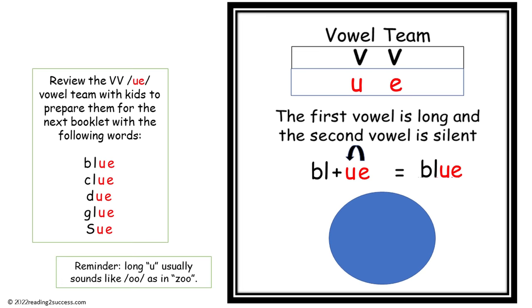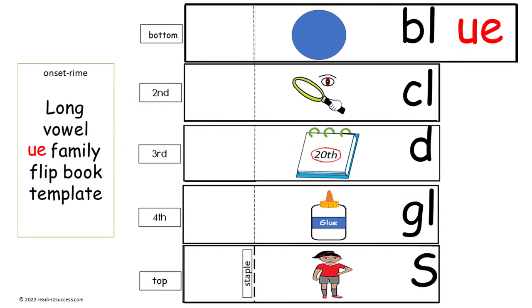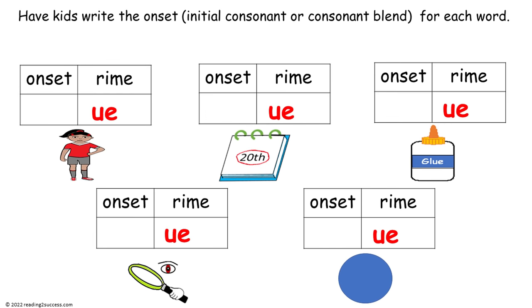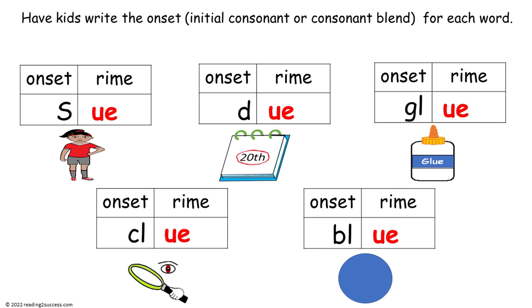Our next onset rhyme is a vowel team U-E, making the long U sound — with a reminder that long U usually sounds like OO as in 'zoo.' The words kids will be practicing are blue, clue, do, glue, and zoo. This is a template for the long U vowel team U-E booklet. Have kids write the onset — the initial consonant or consonant blend — for each word. This is a completed example.